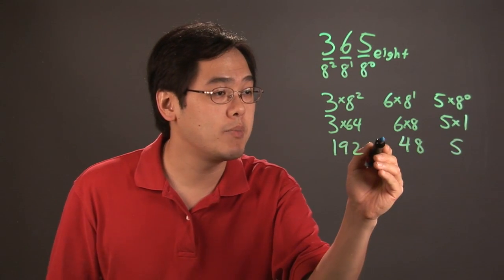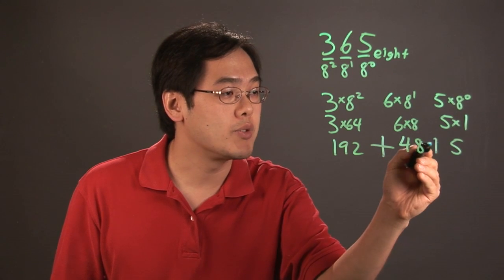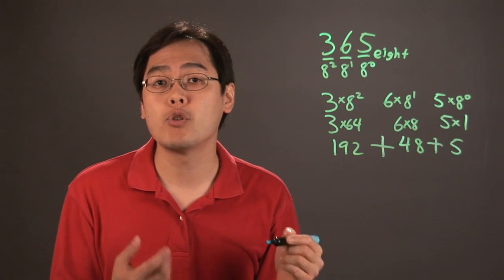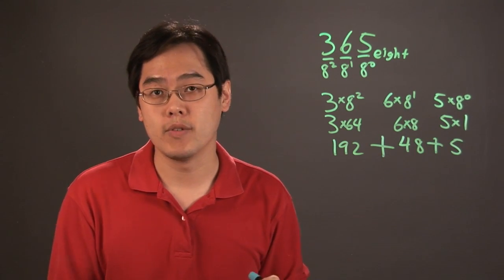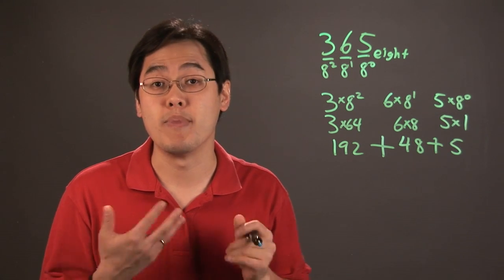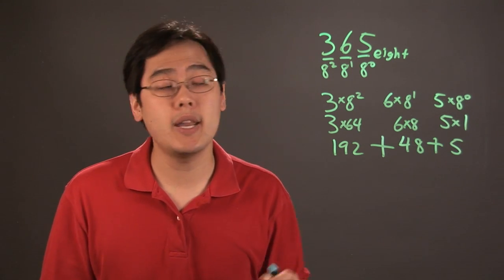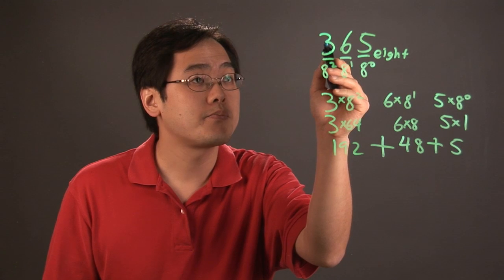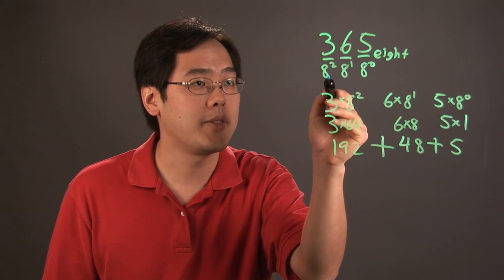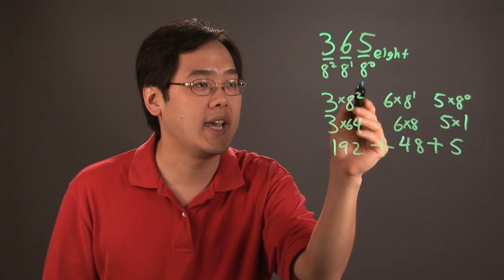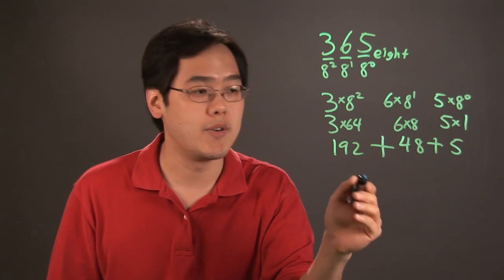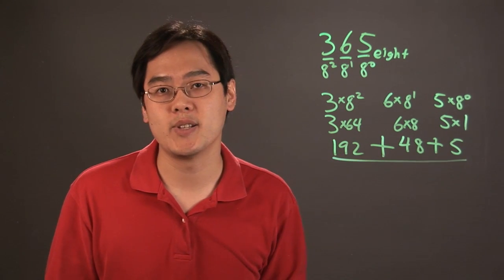Now what you do after that is you add all those numbers. And whatever result that you have is going to be the number in its equivalent form in decimal or base 10 form. So the bottom line is, you take each placeholder, multiply by the corresponding value of base 8, and then simplify. And then you add. And whatever number you get is going to be your final answer.